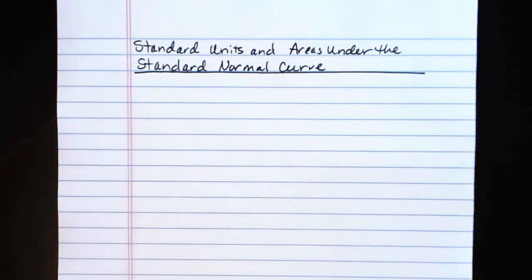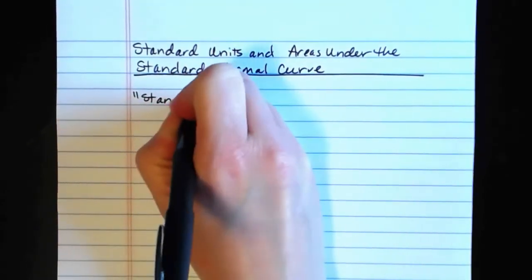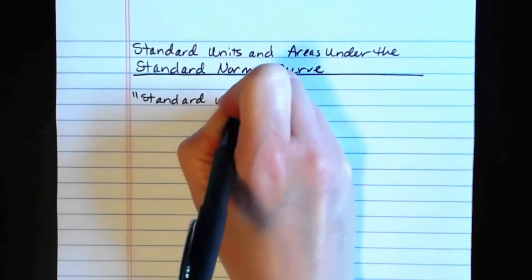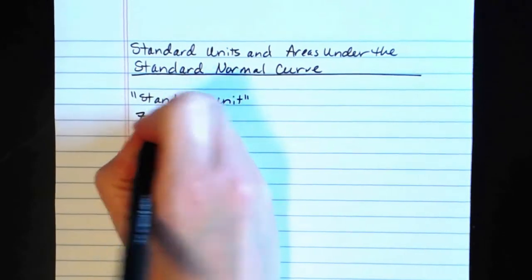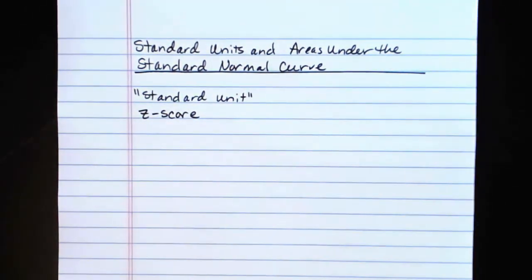So the standard unit that is being referred to is something called the Z-score. And there's a very straightforward formula for calculating it.